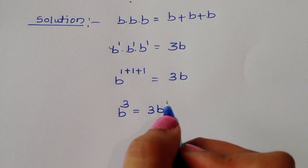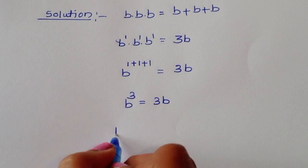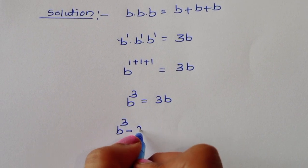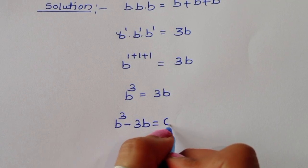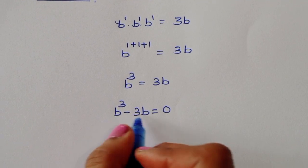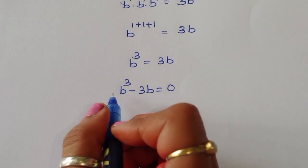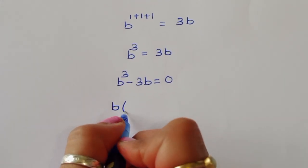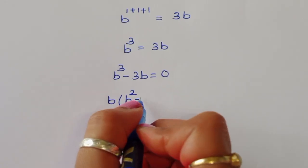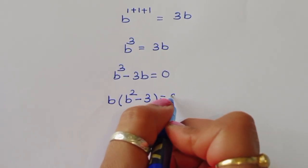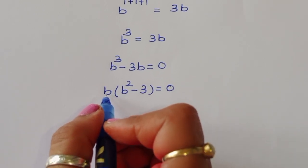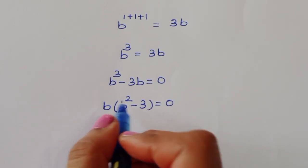So b power 3 is equal to 3b. Rearranging: b power 3 minus 3b equals 0. We can take b as a common factor, giving us b times (b squared minus 3) equals 0.